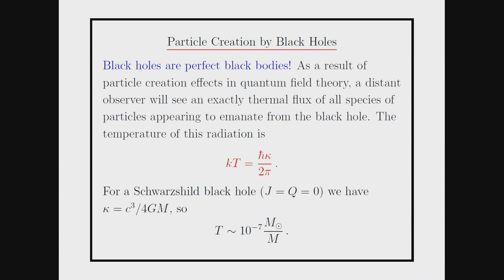That's a very small temperature for a solar-mass black hole. You'd need black holes of around 10 to the 15th grams or so to get a radiating temperature that matters. Smaller black holes radiate more — temperature scales as 1 over mass — so you'd need very small black holes to get a very large effect.